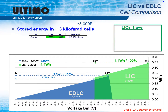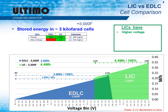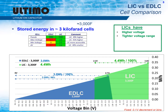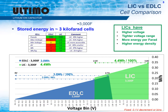In comparing LICs to EDLCs, LICs have higher voltage at 3.8 volts per cell, tighter usable voltage range, more energy per farad, and higher energy density, all resulting in more accessible energy.